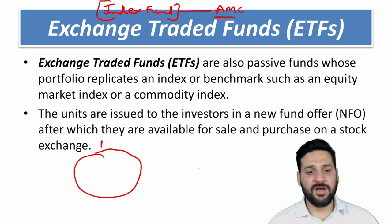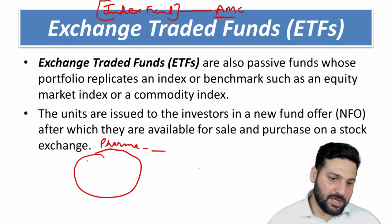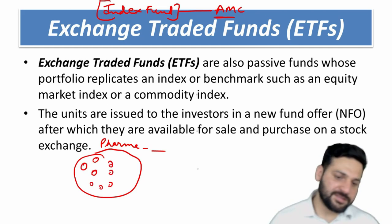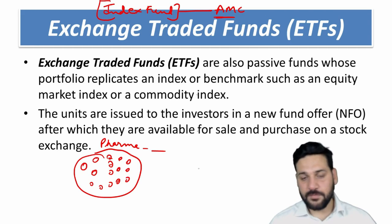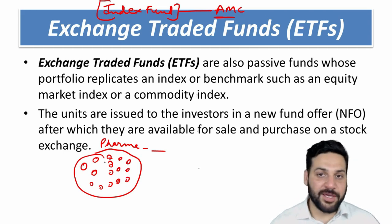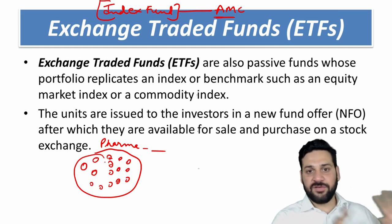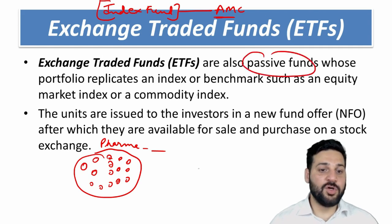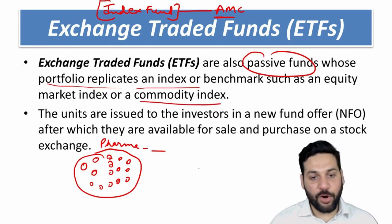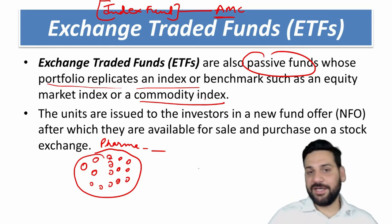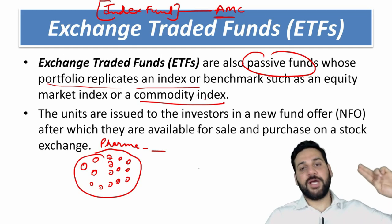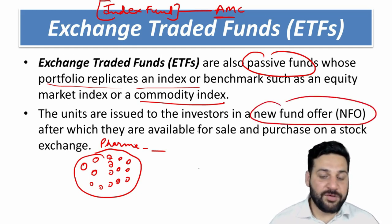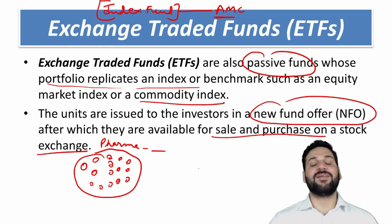But in case of exchange traded funds, or ETFs, they create a unit consisting of various stocks — for example, Reliance Industries, Hero MotoCorp, Ashok Leyland, and so on. This ETF unit is then listed on a stock exchange. After the NFO is done, if you want to buy or sell, you need to go to the stock exchange because ETFs are listed there. ETFs are also passive funds whose portfolio replicates an index, similar to index funds. The basic difference is: for an index fund you go to the AMC; for an ETF, units are issued via NFO, after which they are available for sale and purchase on a stock exchange.